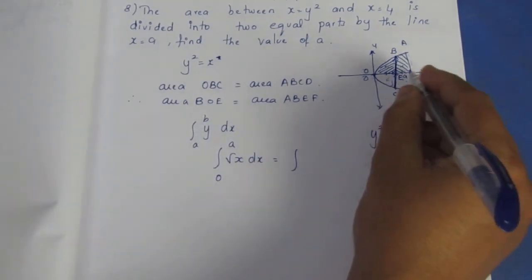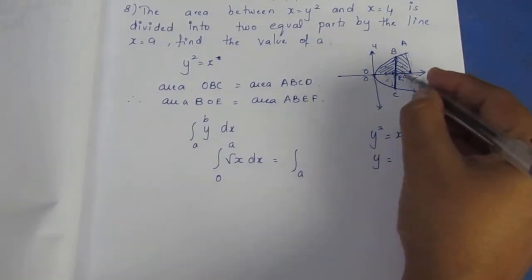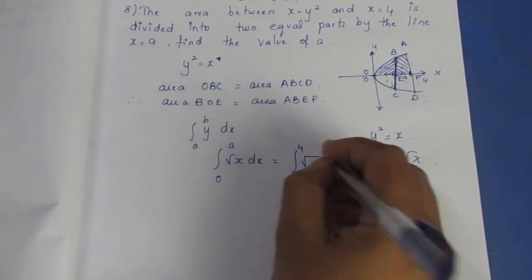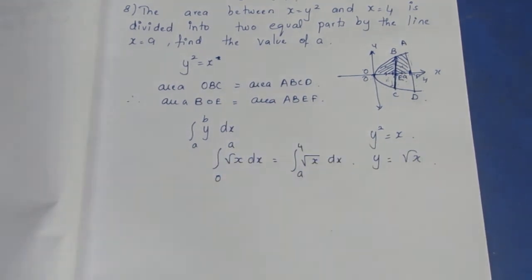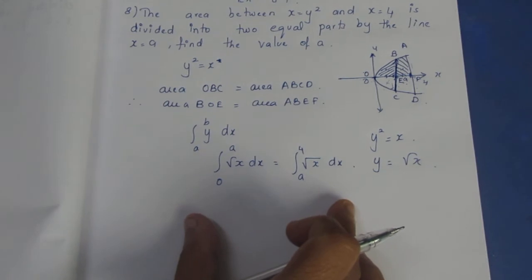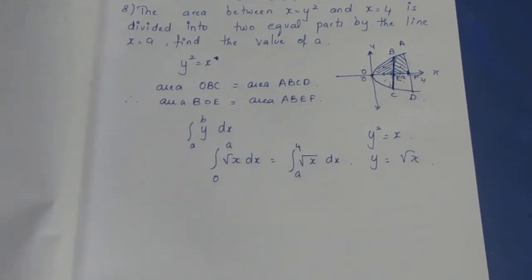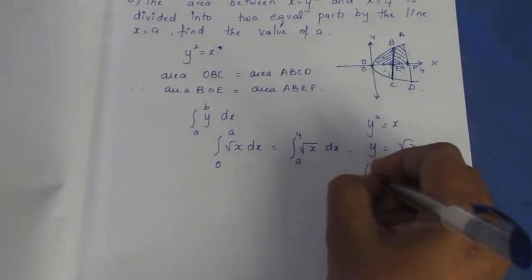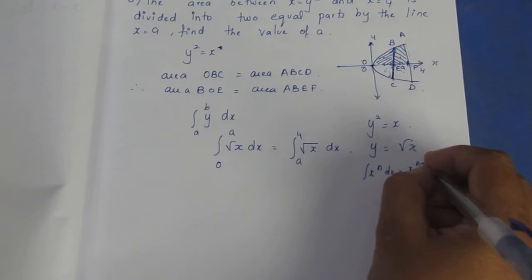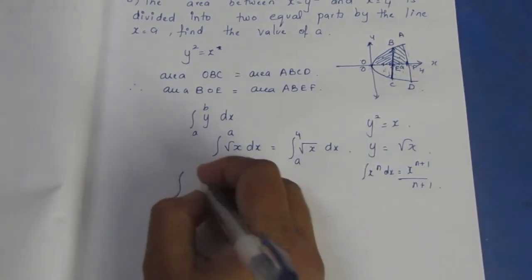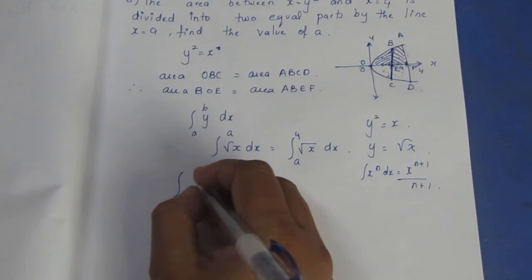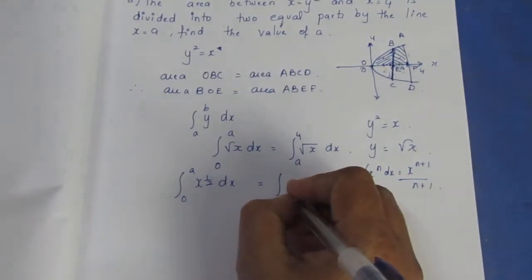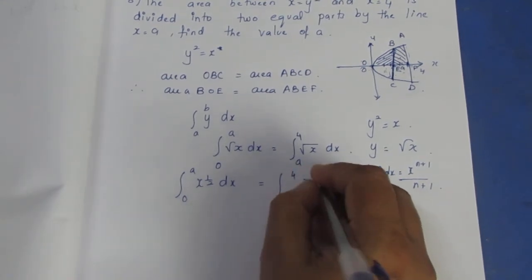From a to 4, we integrate root x dx. So the integral from 0 to a of root x dx equals the integral from a to 4 of root x dx. Root x is x to the power of one half.